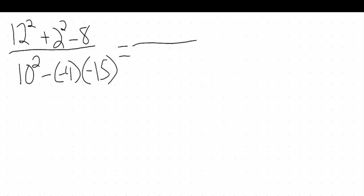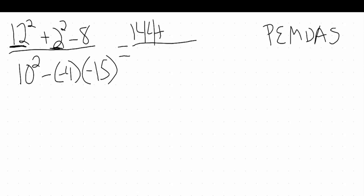We need to keep our order of operations rules in mind. Starting with parentheses — I don't have any in my numerator. Next is exponents, and we have two: 12 squared and 2 squared. 12 squared means 12 times 12, which is 144. Plus 2 squared — 2 times 2 is 4. Carrying over that minus 8, we have no multiplication or division, so we do addition and subtraction left to right: 144 plus 4 gives 148, then 148 minus 8 gives us 140. Our simplified numerator is 140.